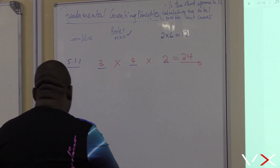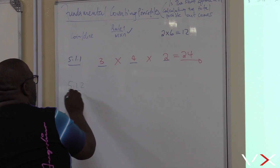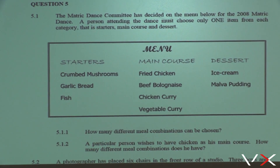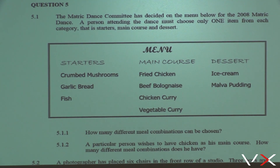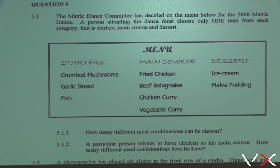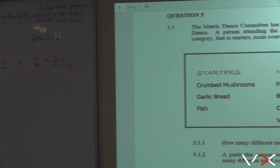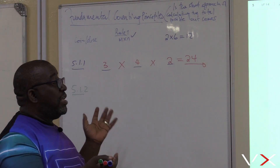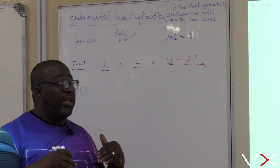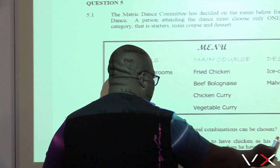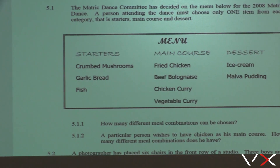Question 5.1.2: A particular person wishes to have chicken as his main course. How many different meal combinations does he have? The option he chooses in the main course is chicken, but the other options — starters and dessert — are still available. The only change happening here is in the main course.